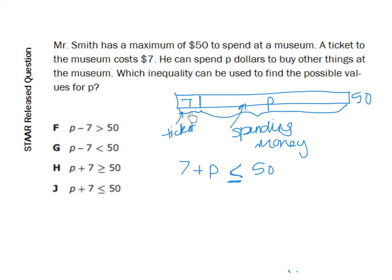But when we look over here, we realize he can spend every cent of his $50. He can go home with not a penny in his pocket. So it can also be equal to $50. So his cost of the ticket plus whatever he spends, he might not spend all of it. He might just buy a drink. He might buy a t-shirt. But he cannot go over $50. So $50 is the most he can spend. So we see that J is our choice.